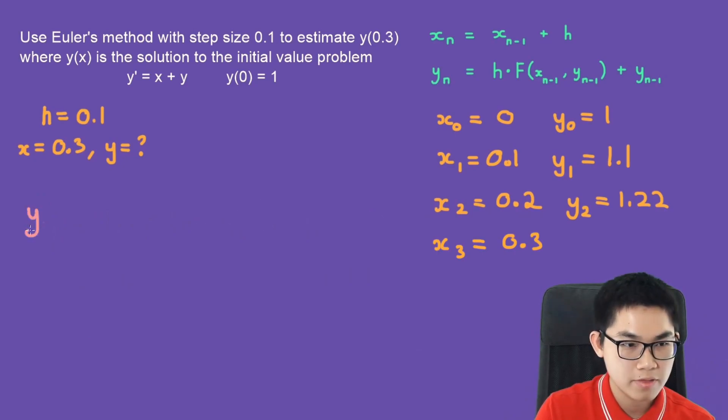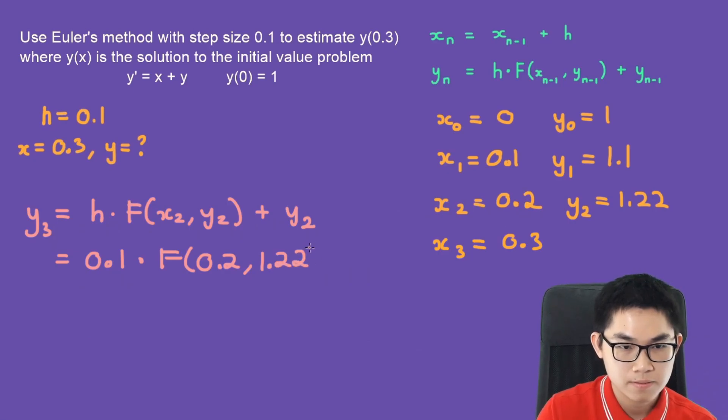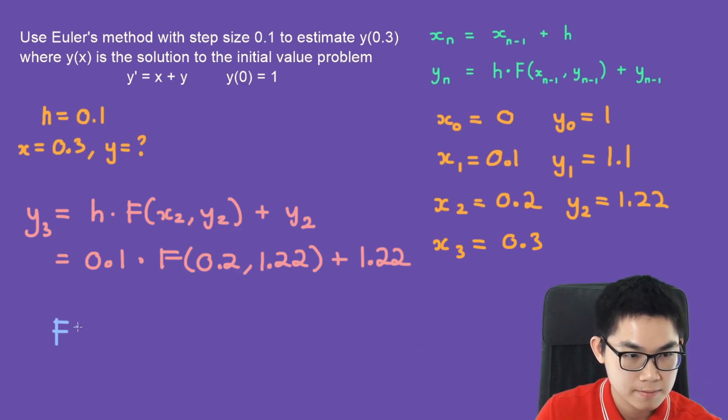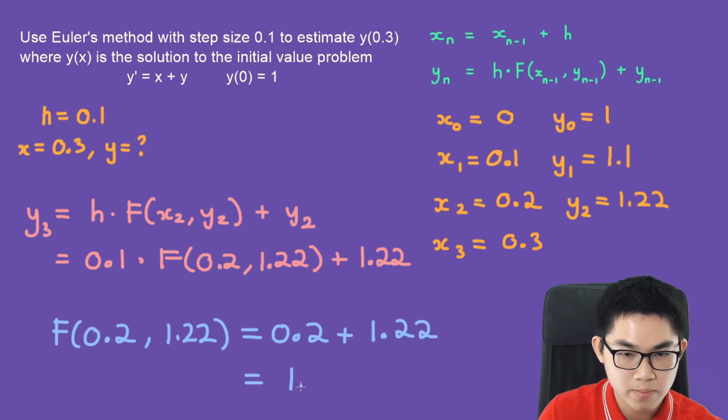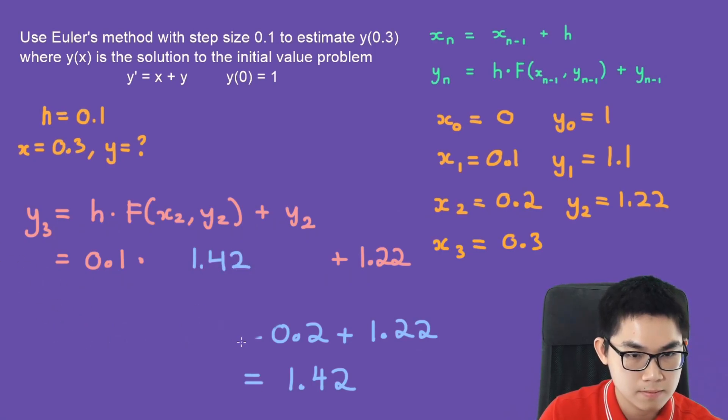How about y3? So y3 is h times f(x2, y2) plus y2. So h is 0.1 times f at x2. And x2 is 0.2, y2 is 1.22 plus 1.22. And again, we calculate this one. This will give us 0.2 plus 1.22, which is 1.42. And all of this gives you 1.362.